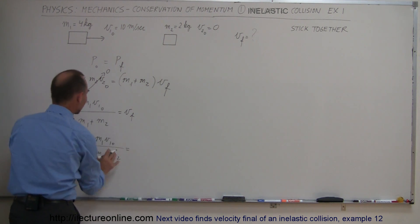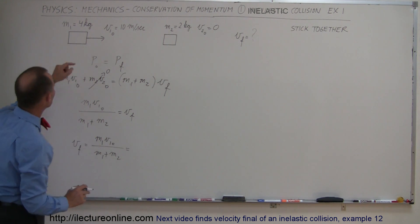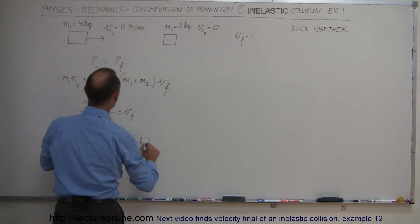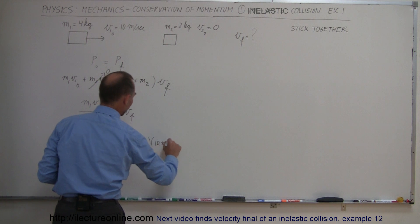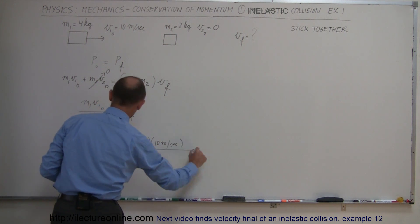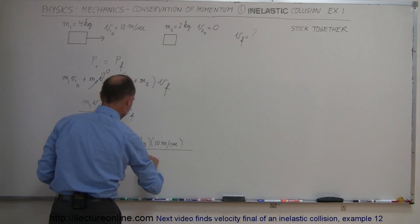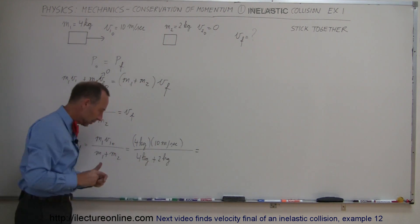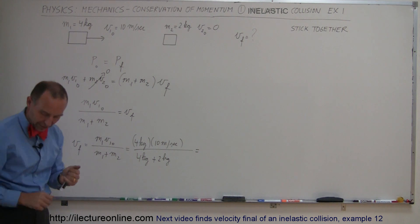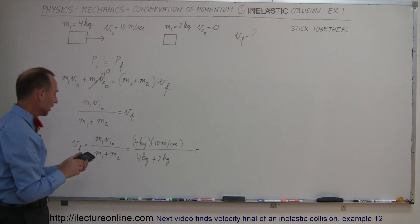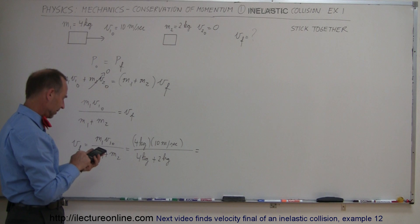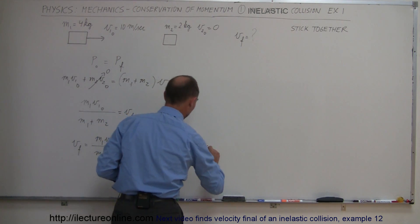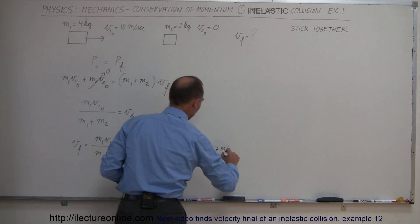And then I go ahead and plug in the values. So m1 was 4 kilograms and v1 initial is 10 meters per second divided by m1 which is 4 kilograms plus m2 which is 2 kilograms. And with a calculator, do I need a calculator for that? Let's see, we get 40 divided by 6 equals 6.67 meters per second.